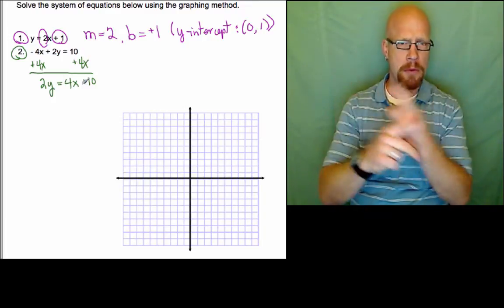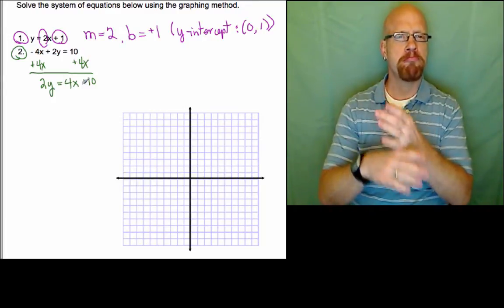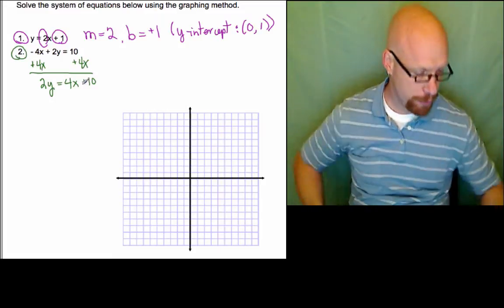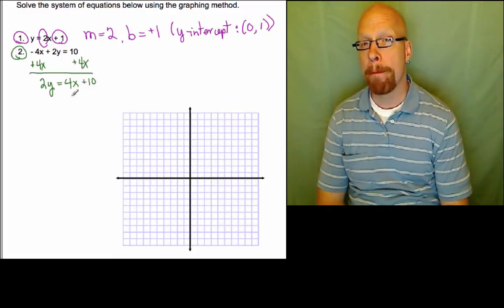Now we have 2y to contend with. The relationship between the 2 and the y is multiplication, so the inverse operation would be division, or the opposite you could say.